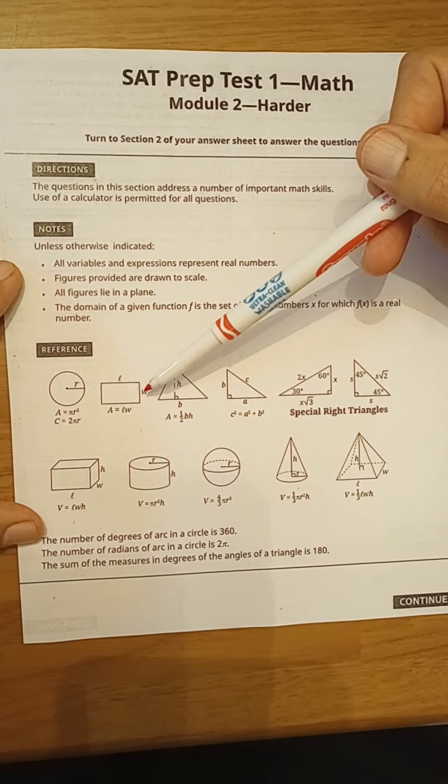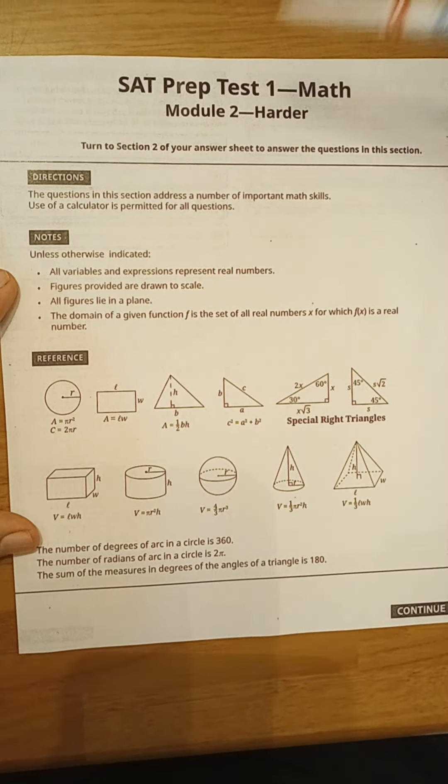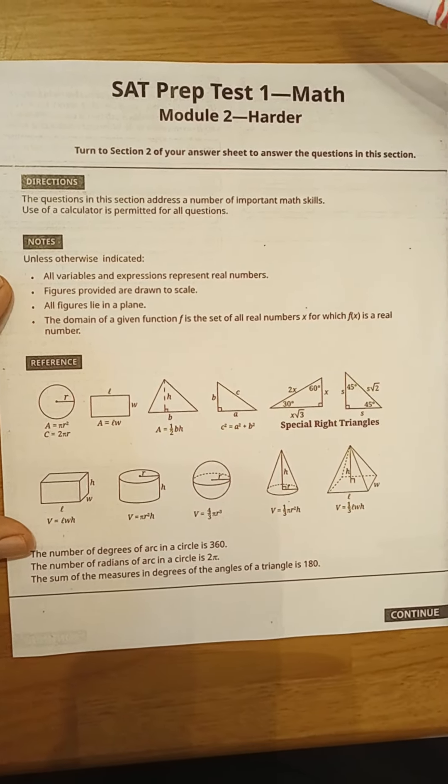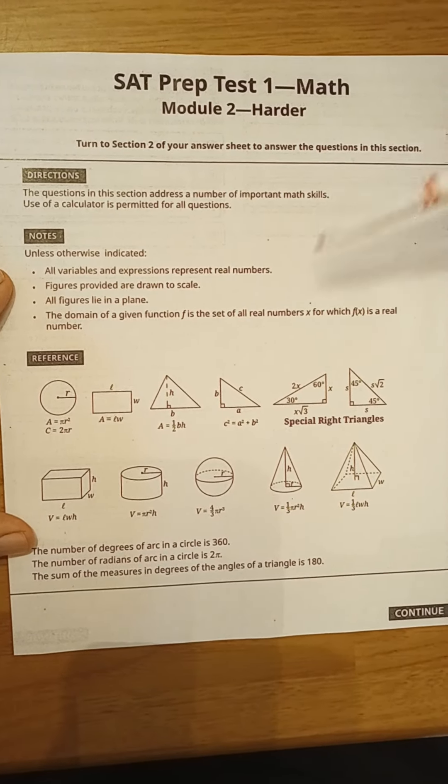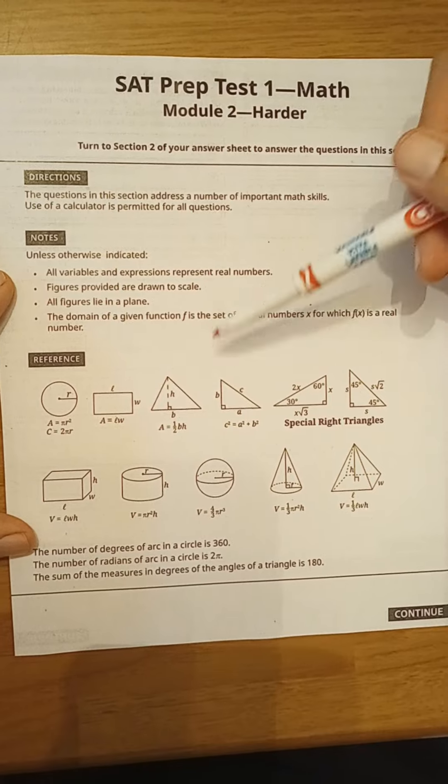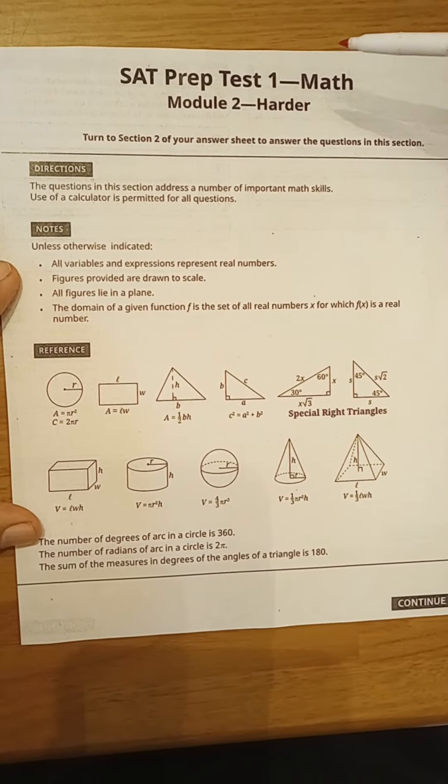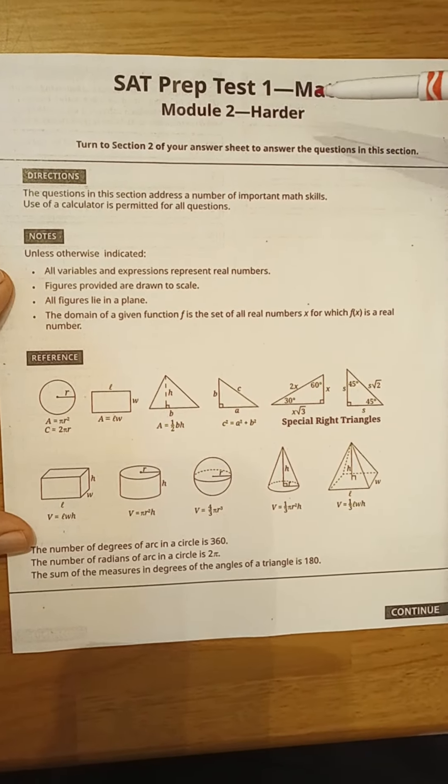Now let's look at this reference sheet. I would say you need to know most of this cold. For a circle, you need to know that the area is pi r squared and the circumference is 2 pi r. For the area of a rectangle, it's length times width, side squared for a square. The area of a triangle is one half base times the height.